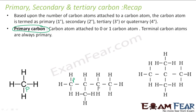This carbon has 2 attached, so it is not primary. This carbon here has one carbon attached, so this one is also primary. Similarly, this carbon has one carbon attached — also primary. This carbon has only one carbon attached, so it is primary. But this carbon has 4 carbons attached, so it is not primary. These are all my primary carbon atoms.